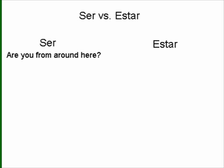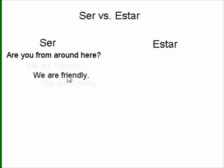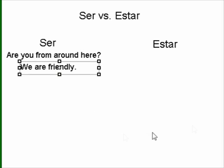Let's look at another example: we are friendly. Again, pause and take a minute to think about it, and then I'll tell you where this goes and why. We are friendly — that's a characteristic. Characteristics are ser.